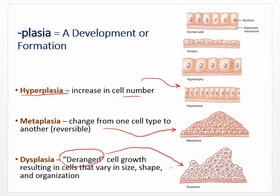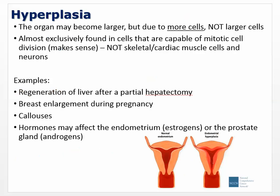Hyperplasia: the organ may become larger, but it's due to more cells, not larger cells. Hyperplasia can occur in a certain region — you see way more cells than in neighboring areas. It's almost exclusively found in cells capable of mitotic cell division. You can't have more cells if the cell can't divide. So you don't see it in skeletal muscle, cardiac muscle cells, or neurons. Examples: regeneration of the liver after a partial hepatectomy, and breast enlargement during pregnancy.